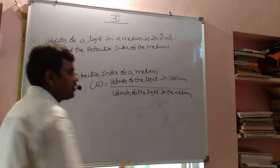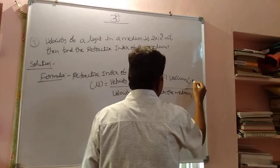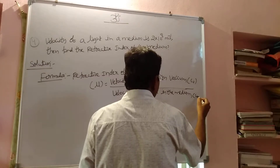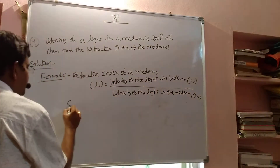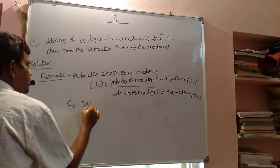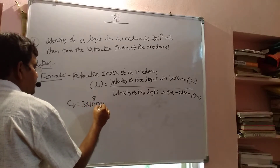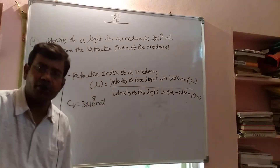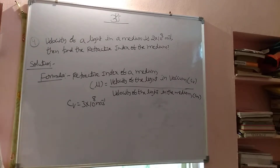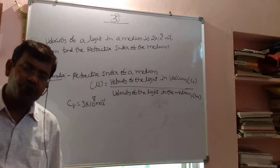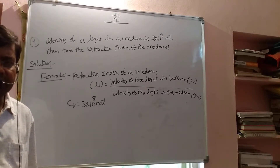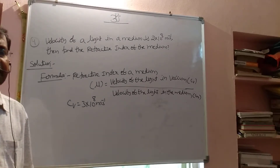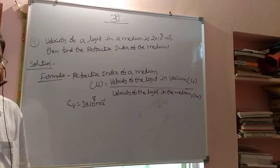The velocity of light in vacuum is a constant value — it does not change. The velocity of light in vacuum, CV, equals 3 × 10⁸ meter per second, that means 3 lakh kilometers per second. The same velocity applies to light in air as well, which is why the refractive index of air is taken as 1.